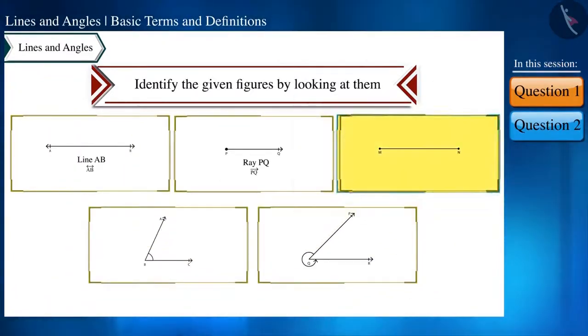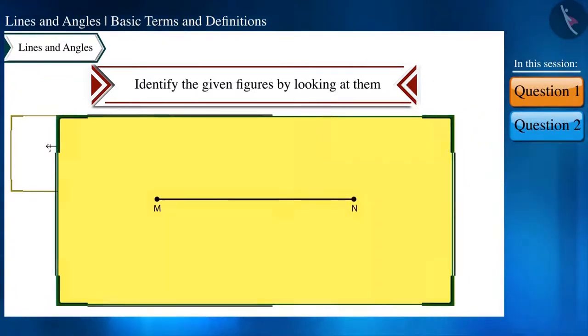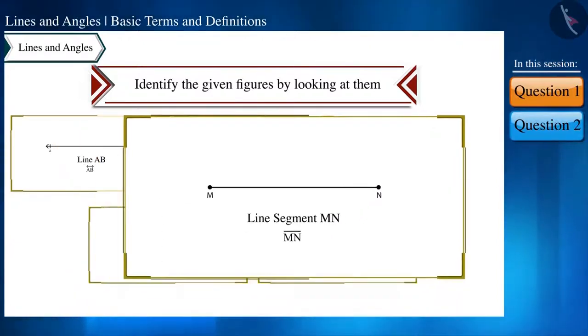In the third figure, here on both ends there is a point. This can be part of any line, so we call it a line segment. This is line segment MN and we can represent it like this.